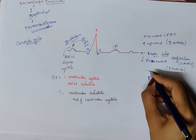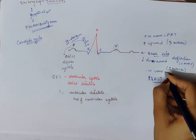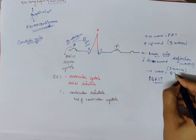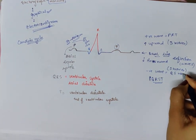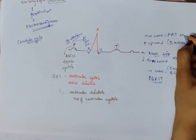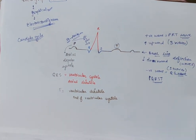There are three upward waves and two downward waves. The upward waves are known as positive waves — those are P, R, and T. The downward waves are known as negative waves — those are Q and S.